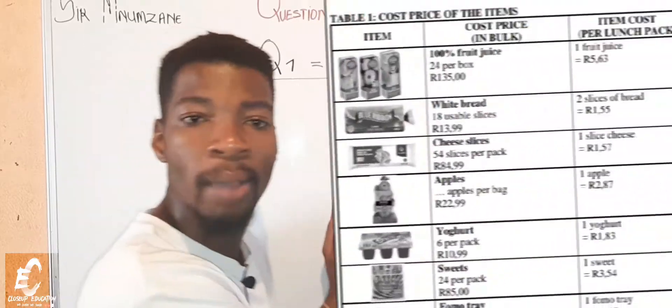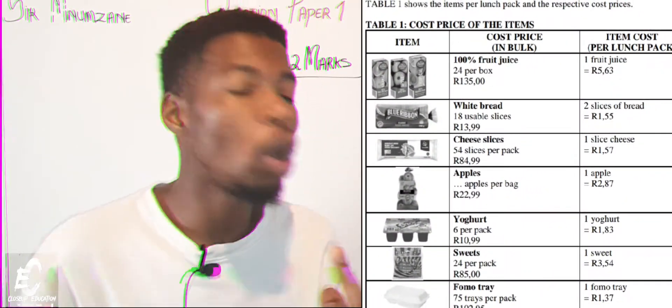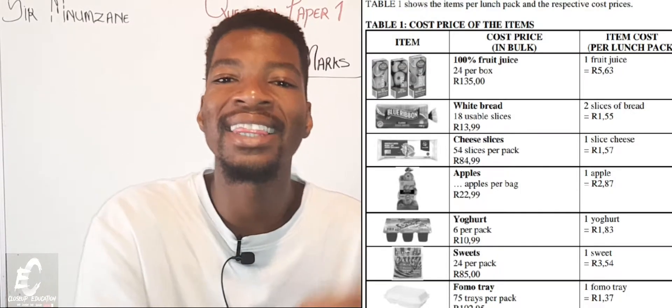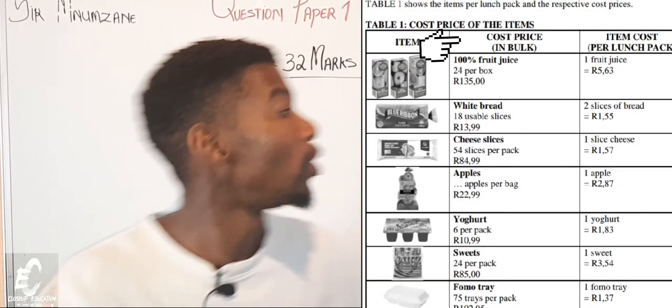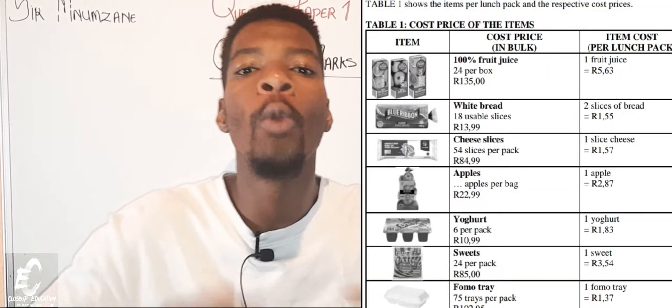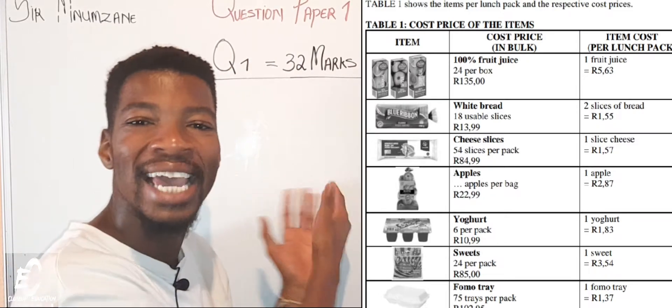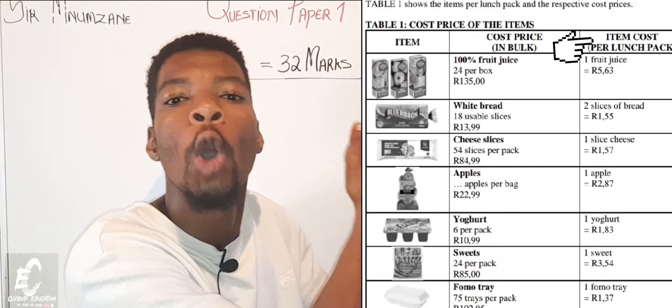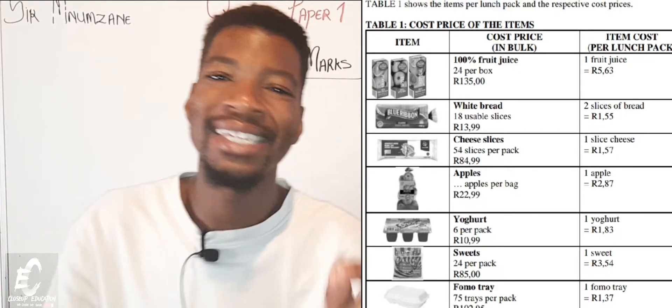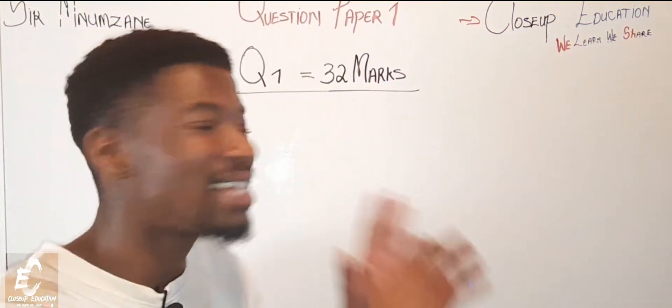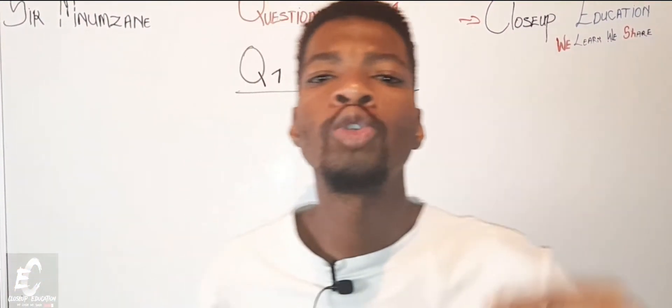Now we know that this table consists of three columns. It consists of the items - we see the items that are making this lunch pack possible. Our second column speaks about the cost amount which she will have to use when she's buying these items in bulk. Then the last bracket tells us the cost of each item not in bulk, but each item. Now that we understand the whole scenario, we can obviously move to our question 1.1.1.